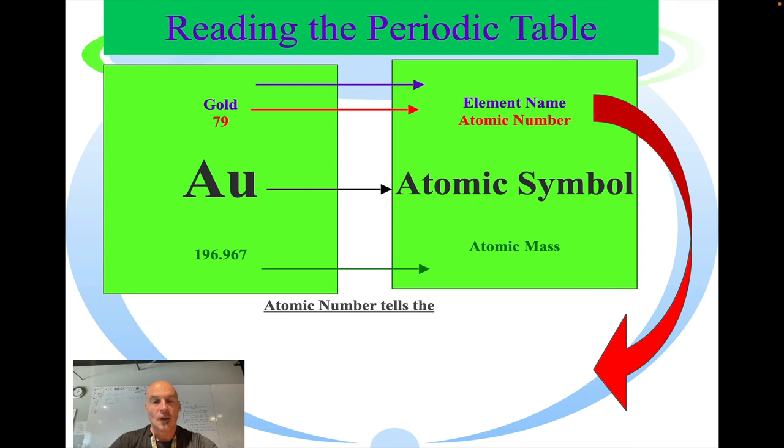The atomic number tells you, again, the number of protons, the number of neutrons, and the number of electrons. Okay, that's it. Hope you liked it. Hope it was helpful, and we'll see you in class.